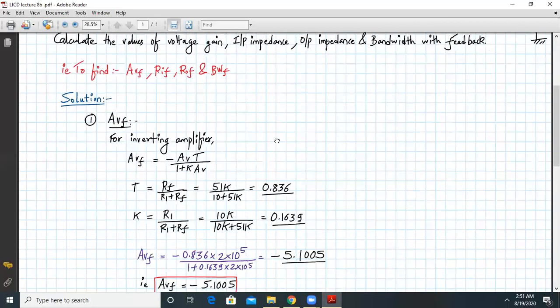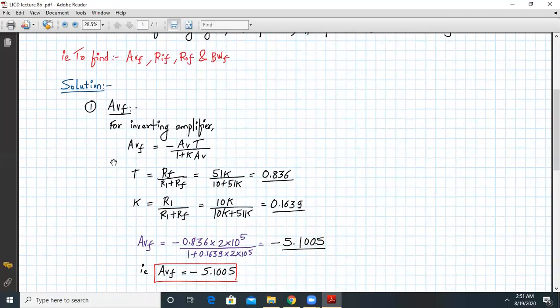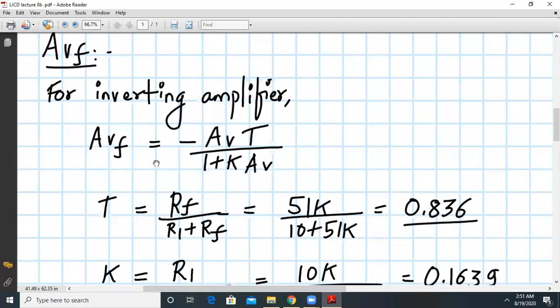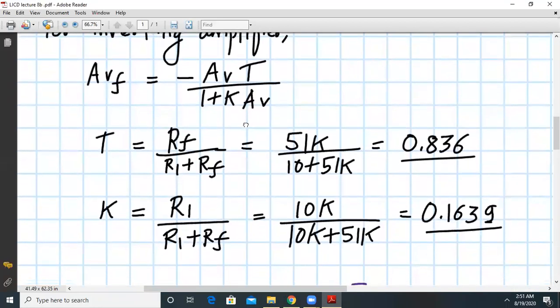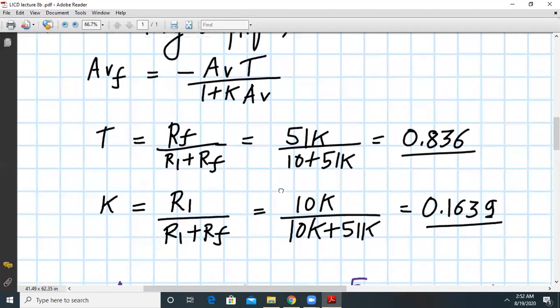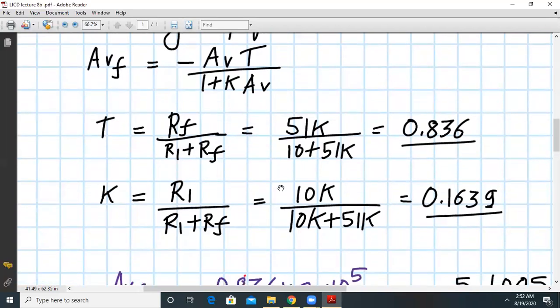Let us start with the solution. For the inverting amplifier, the formula will be Avf is equal to minus Av times T upon 1 plus K into Av, where T is the attenuation factor which is given by Rf upon R1 plus Rf, which will be around 0.836. And K will be R1 upon R1 plus Rf, that will be the feedback fraction or feedback factor. So that will be around 0.1639.